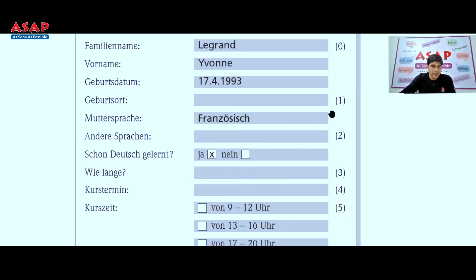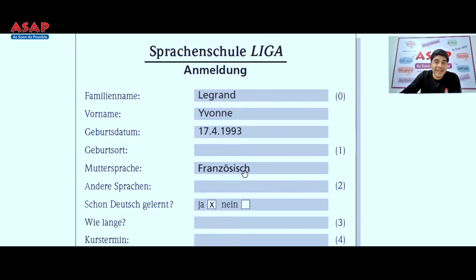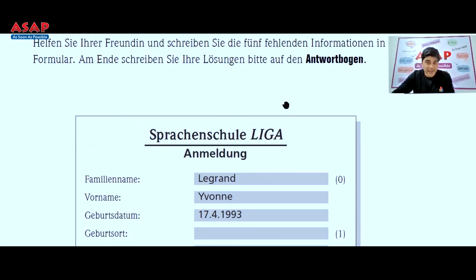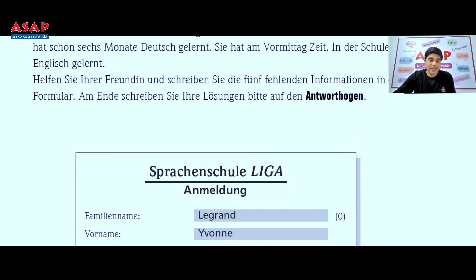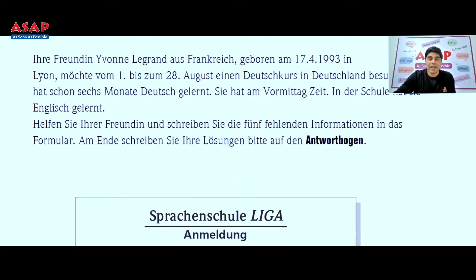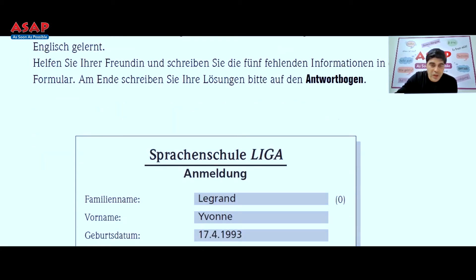If all five answers are correct, you get five marks. It is that easy. You just have to read it quickly, understand it, write the answer, and check your answers at least once after you complete it. This is about form filling — five marks.